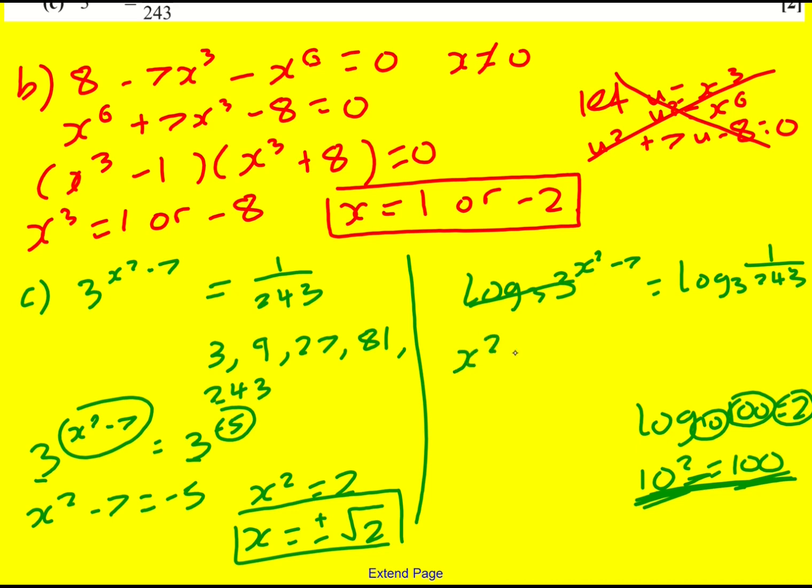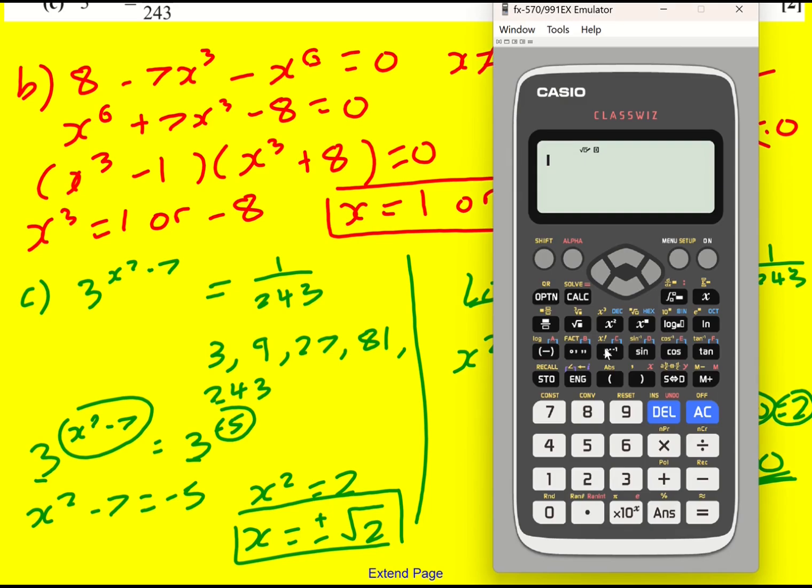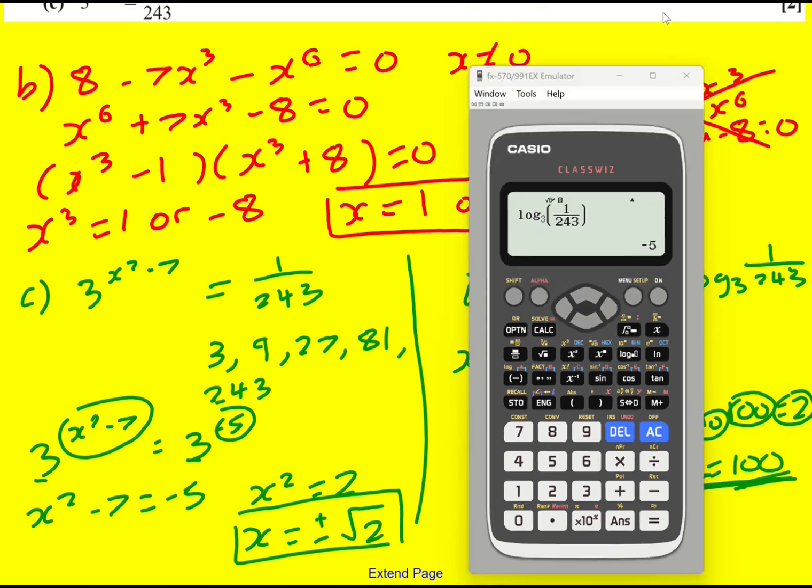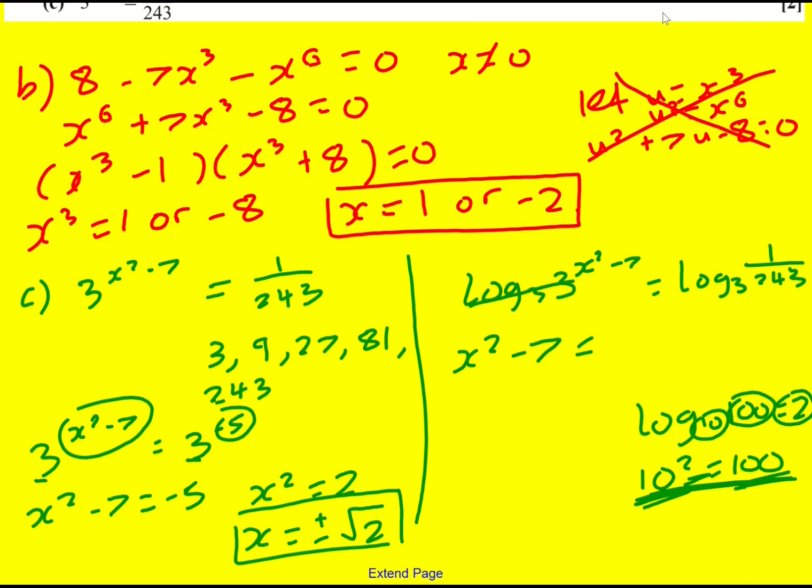So that means x squared minus 7 is going to equal log to base 3 of 1 over 243. It gets me minus 5 so I didn't have to kind of figure it out like I did on the left and then we have the exact same solution from here on, so two different methods.